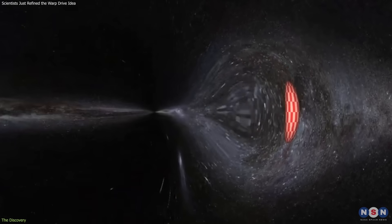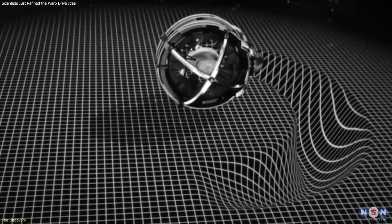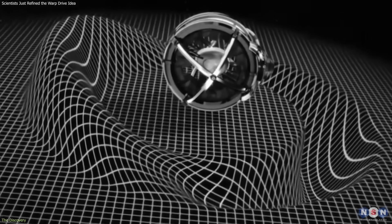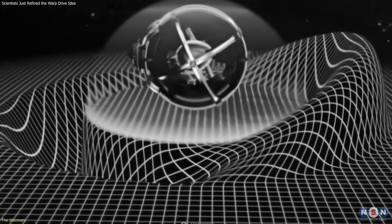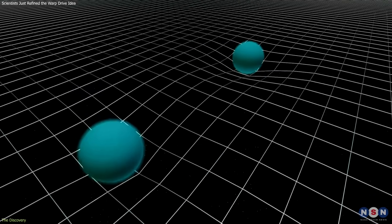Instead, space itself would be reshaped, compressed ahead of the craft, and expanded behind it. Within this spacetime distortion, the spacecraft remains locally stationary and never violates relativity.